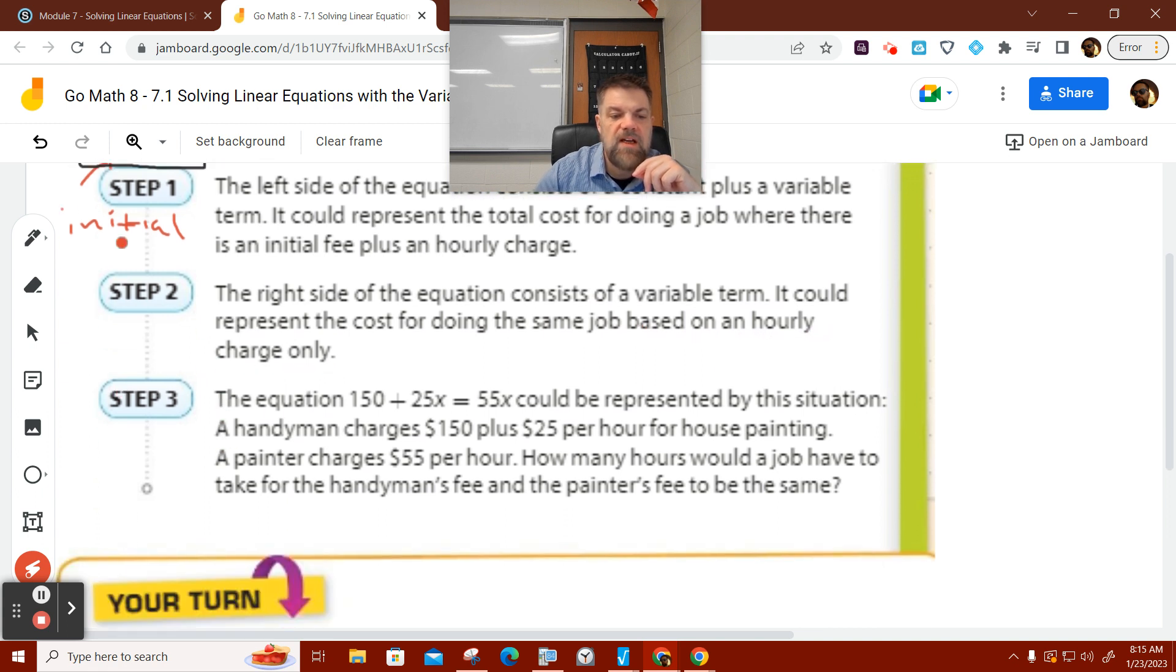Now, the equation 150 minus 25x equals 55 could represent, could be represented by this situation. A handyman charges 150 plus $25 per hour. This is a plus sign. You just can't see it because I copied and pasted it from your textbook. In your book, it probably looks fine. I said minus, but it dawned on me that it's plus.